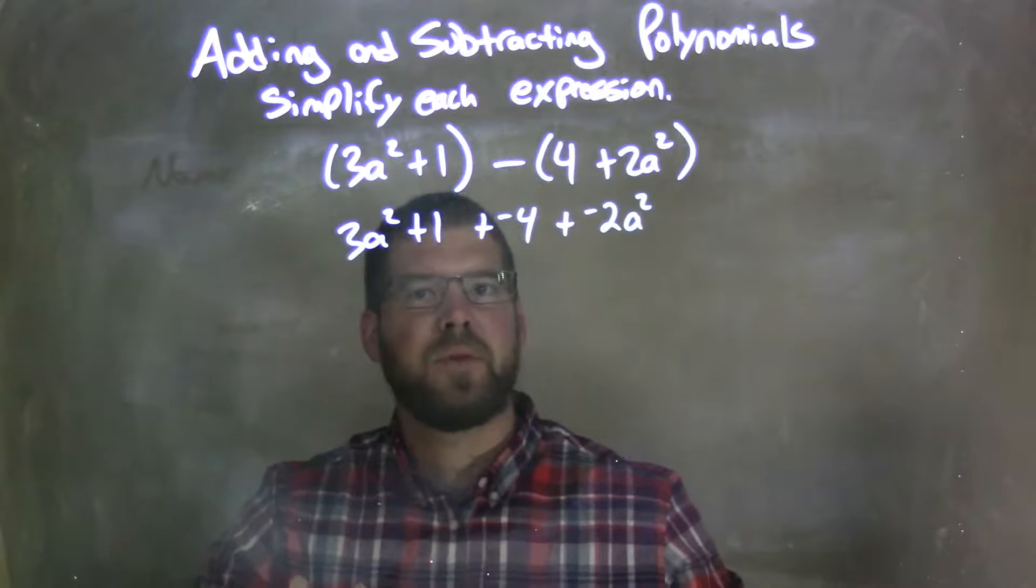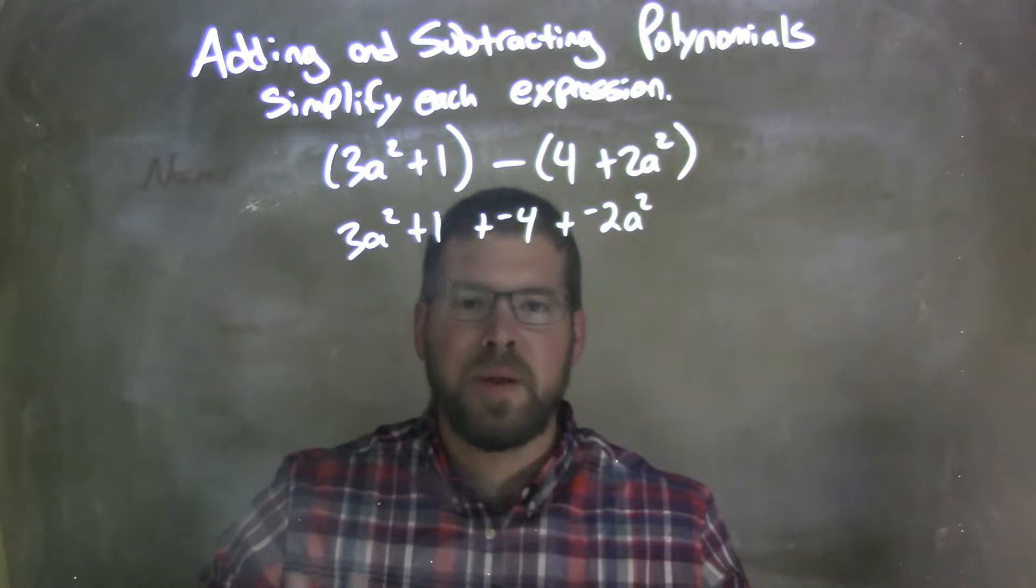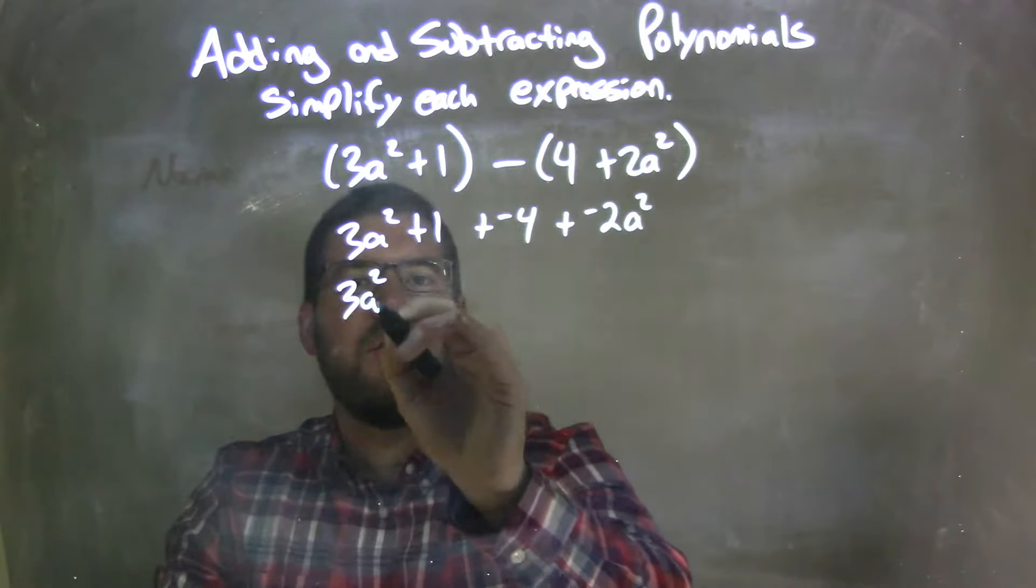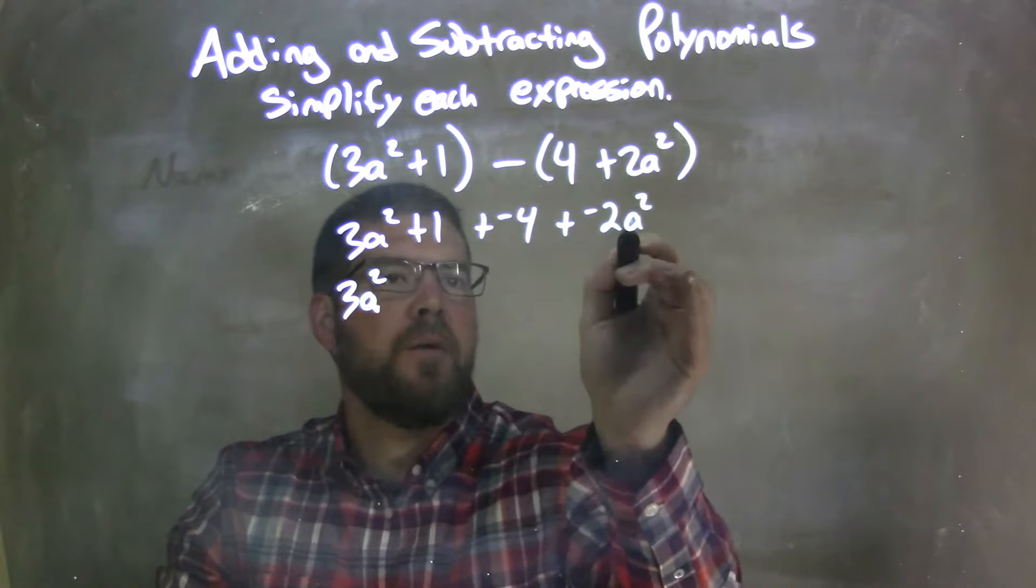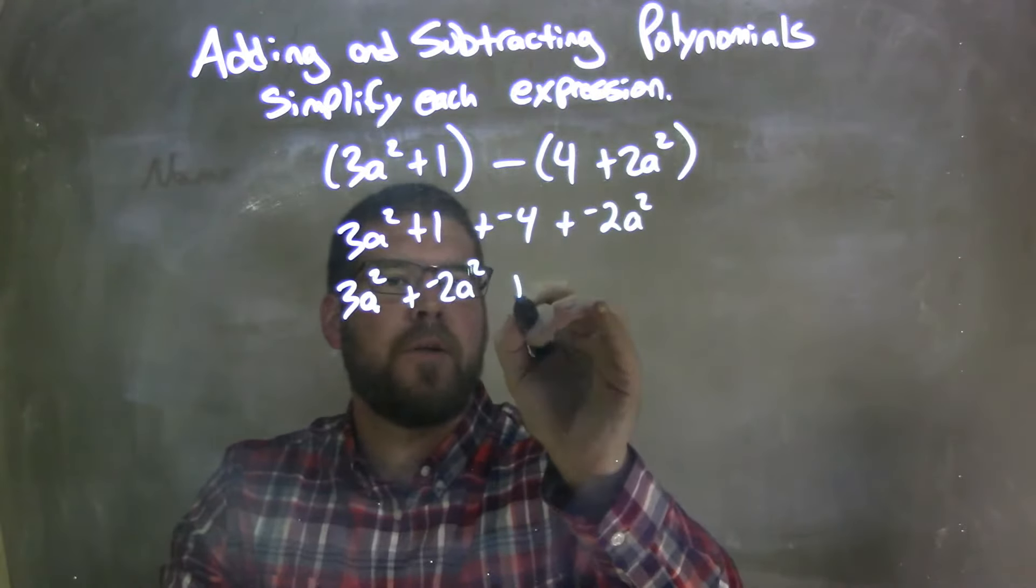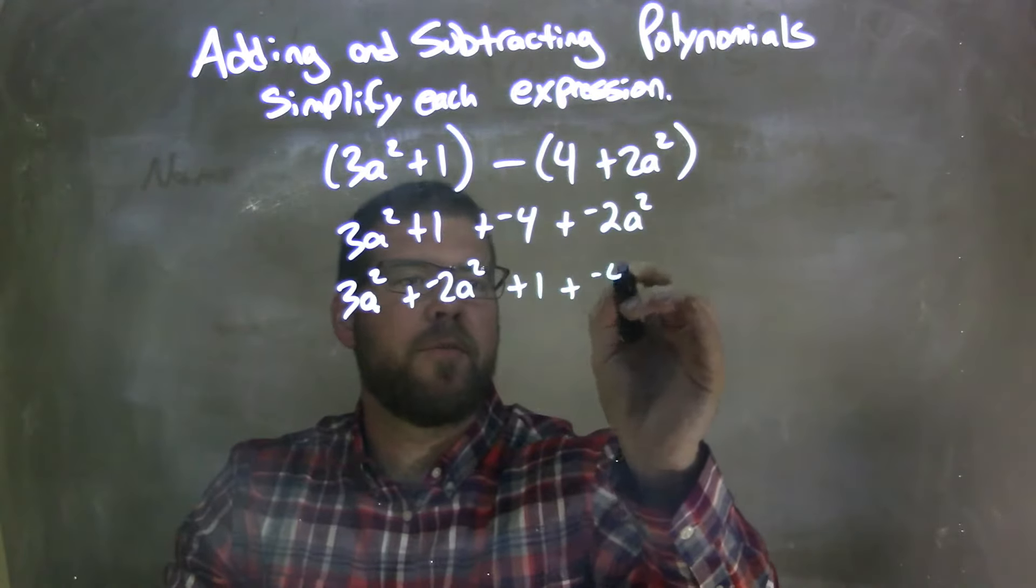Make sure you do that. Now I'm going to rearrange my like terms together in the highest degree first, so 3a squared. Then I have another negative, plus a negative 2a squared. Then we have a plus 1 and a plus a negative 4.